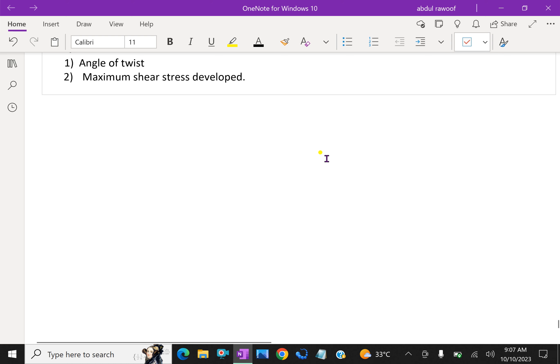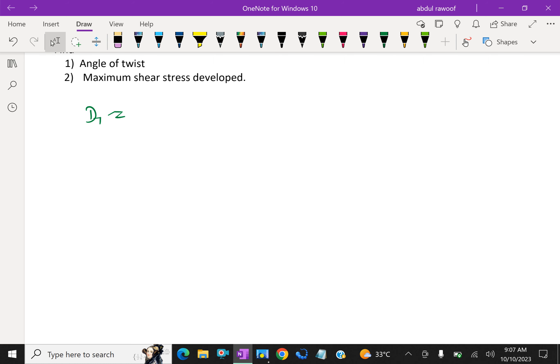Here are the given things: diameter D1 is equal to 160 mm which is equal to 0.16 meter. D2, the greater diameter, is 240 mm, that is equal to 0.24 meter.